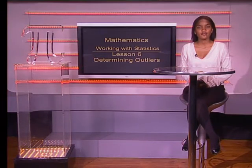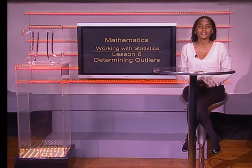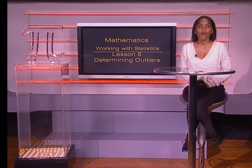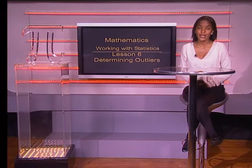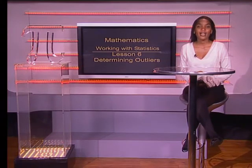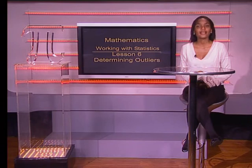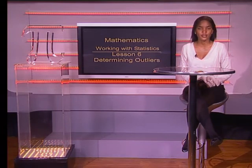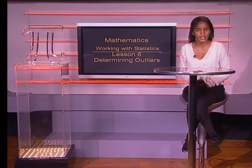In a set of data it sometimes happens that a particular number is extremely high or low in comparison to the other numbers. Such a number is called an outlier. Outliers are important since they can distort the mean and have an adverse effect on the standard deviation.